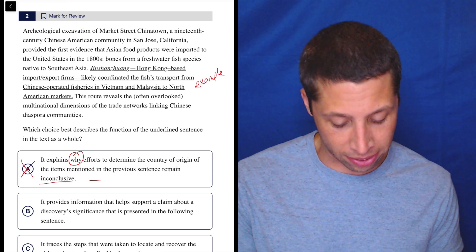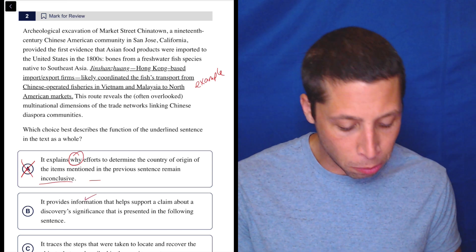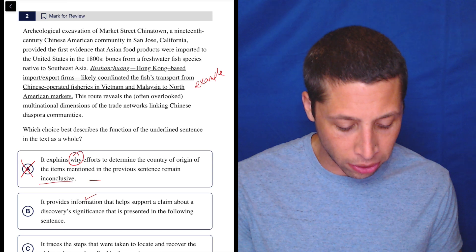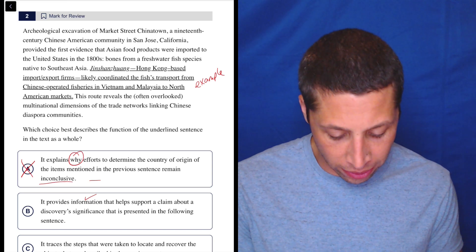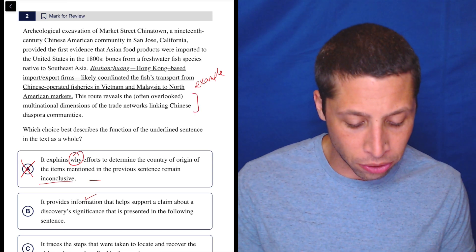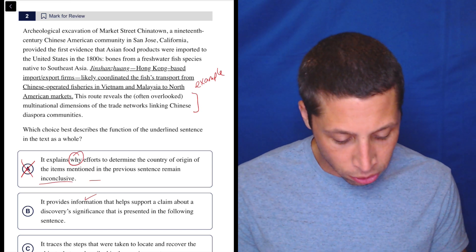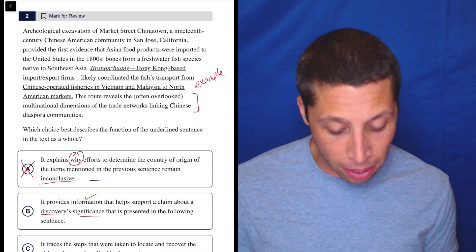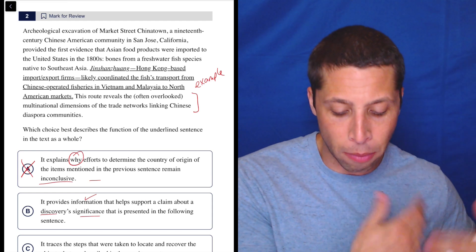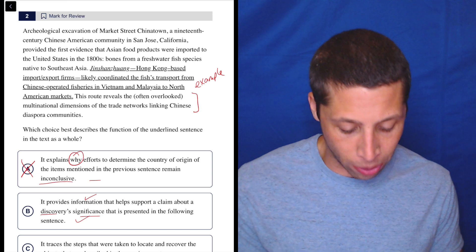Let's look at the different pieces here and see if there's anything that we can prove wrong. Otherwise, vague answers are often right in the SAT. So it provides information, obviously it does that, check. That helps support a claim about a discovery's significance that is presented in the following sentence. So the following sentence here, the route reveals the often overlooked multinational dimensions of the trade networks linking Chinese diaspora communities. So the discovery is significant because it reveals the multinational dimensions of something.